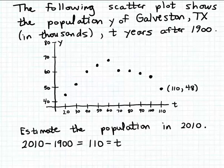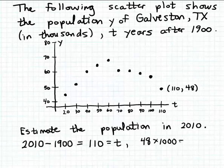It's that 48 that gives us the answer to our question. This 48 doesn't mean the population of Galveston, Texas was 48 in 2010 — that would be a ridiculous value. You have to remember that these y values are measured in units of 1,000. So you take the 48 and multiply it by 1,000, giving us an estimated population of 48,000 in 2010.